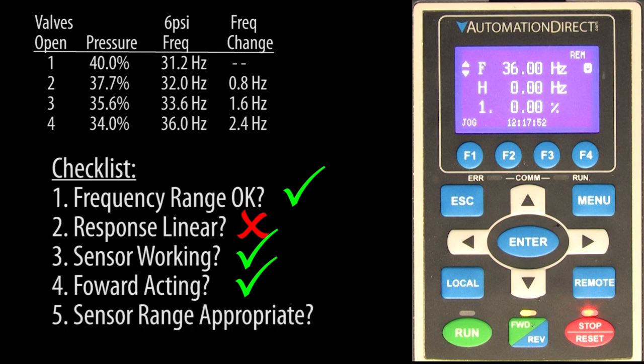We also know that the sensors are appropriately sized for the job. We are operating in the middle of the sensor's 15 PSI range. If we were using a 100 PSI sensor and we only needed around 6 PSI, then we would be using a very small portion of the sensor's range.